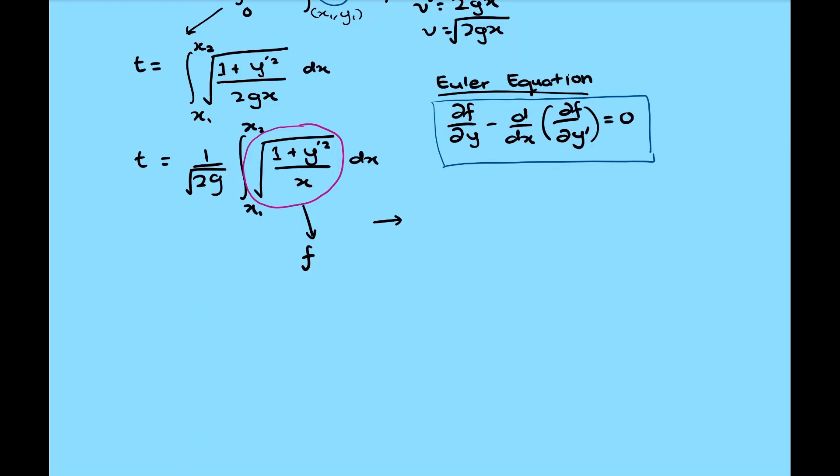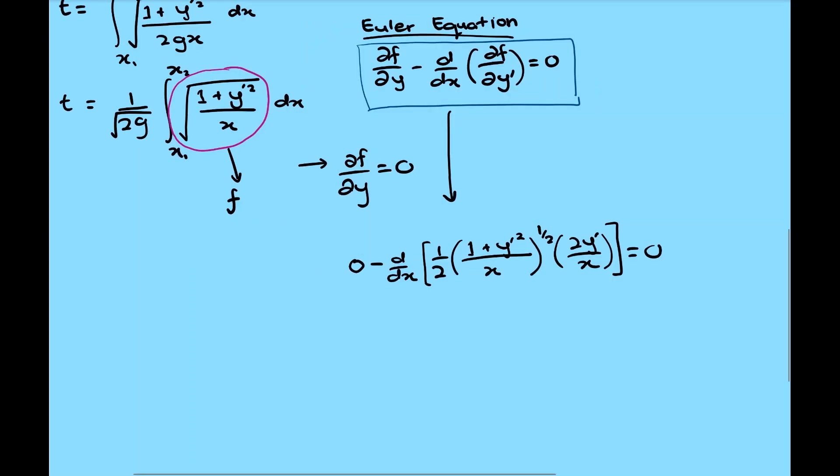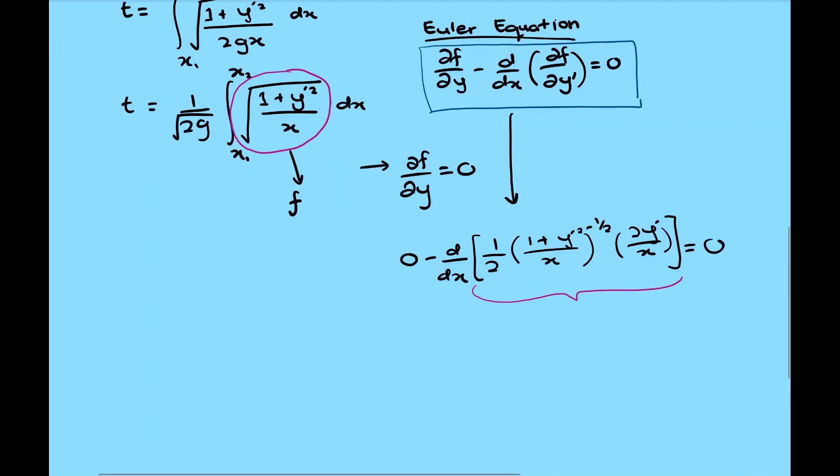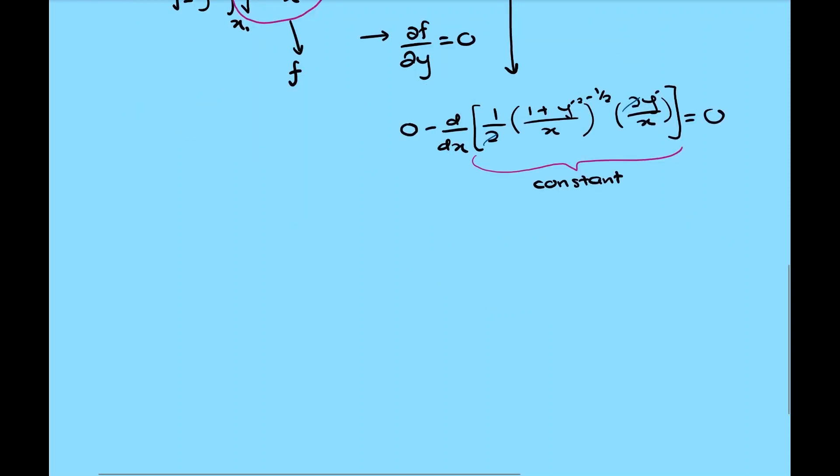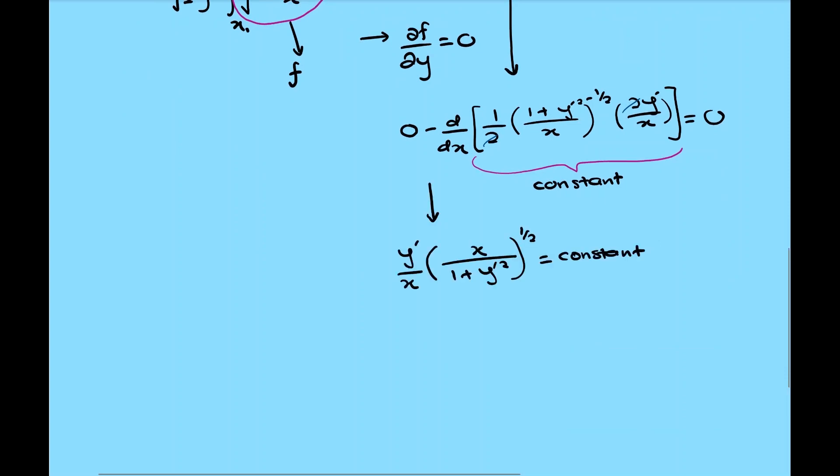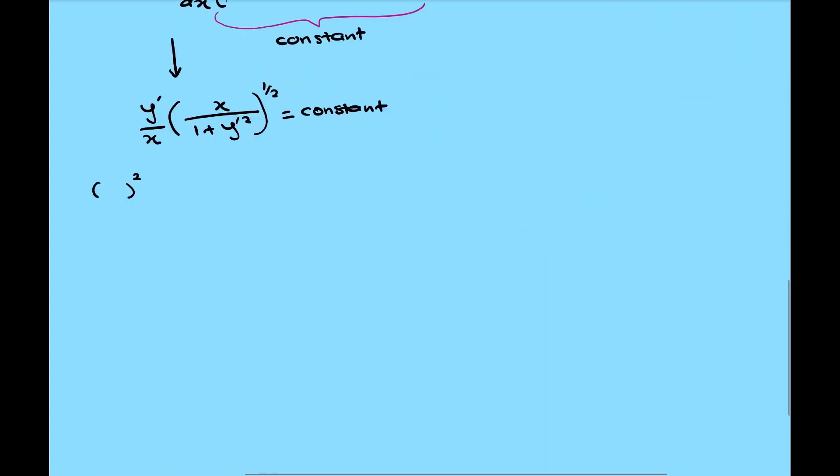For the first term, since f does not contain y, therefore the first term just becomes zero. So we just need to solve for the second term, which will be in this form. With this form, we have the derivation of the term with respect to x is equal to zero, which means that the term itself is just a constant. Next, we simplify it and rearrange. Now it is in this form. Square all the terms. Now we have the equation in this form equal to 1 over 2a, which is basically just another constant.